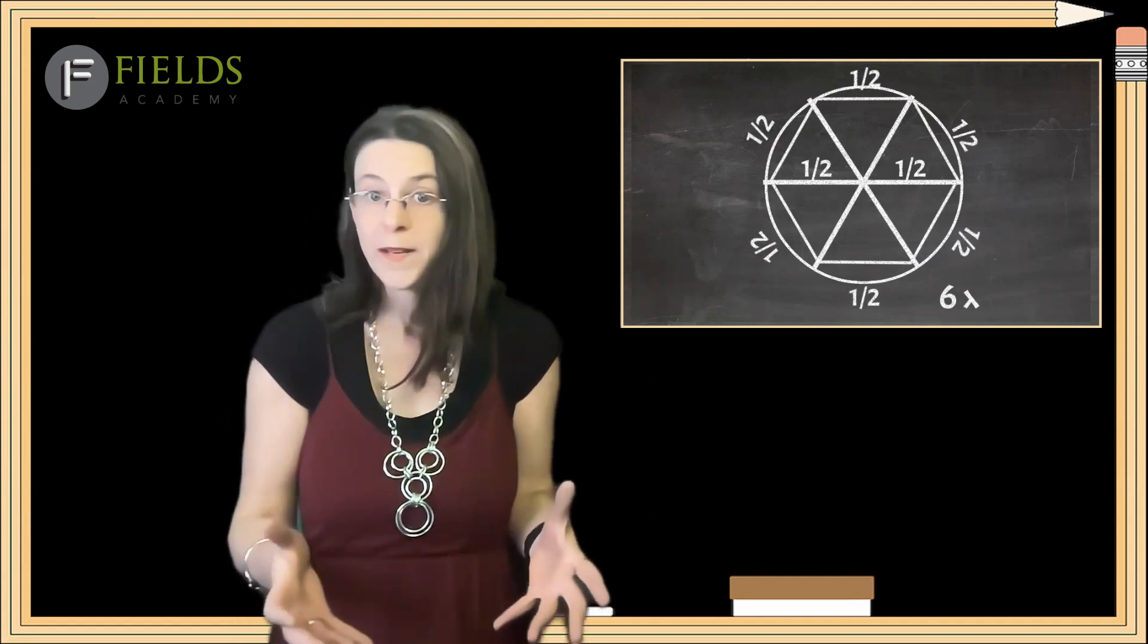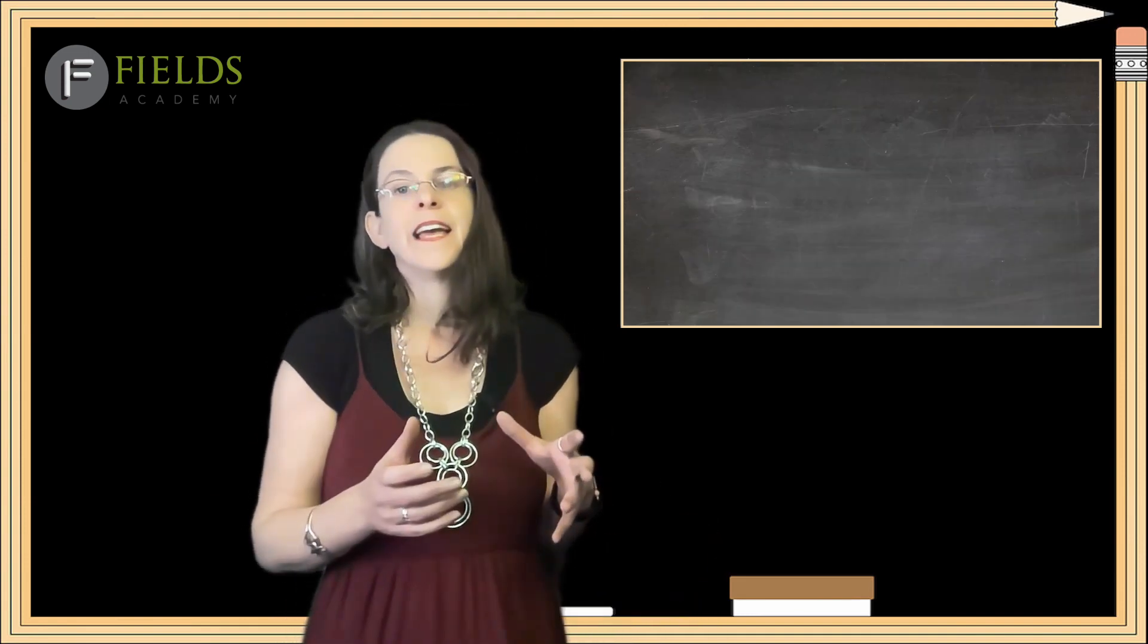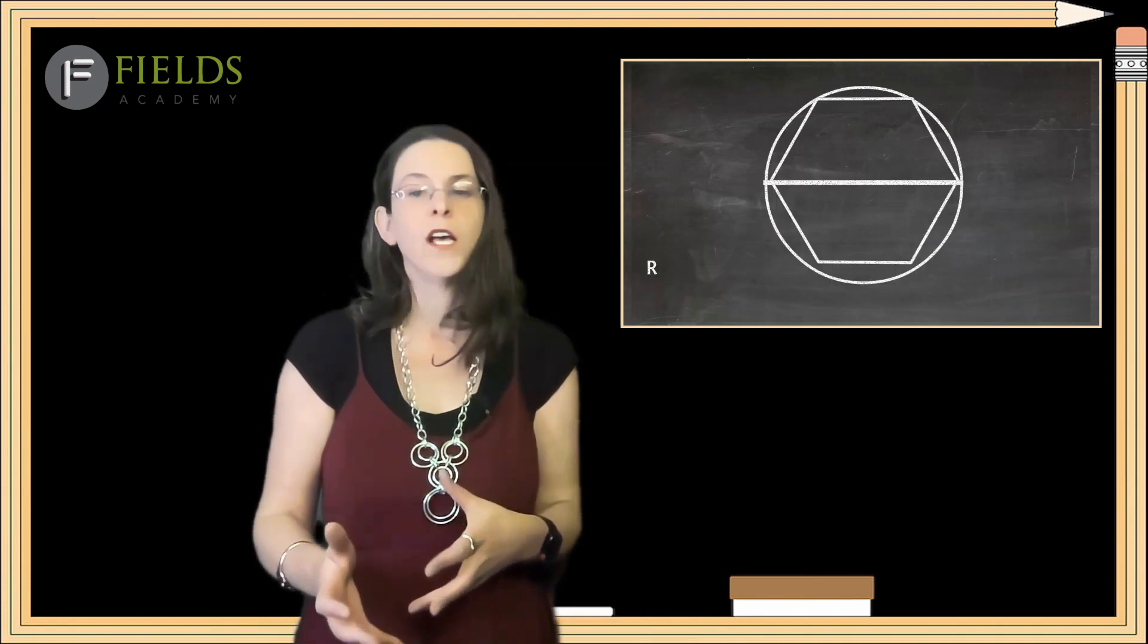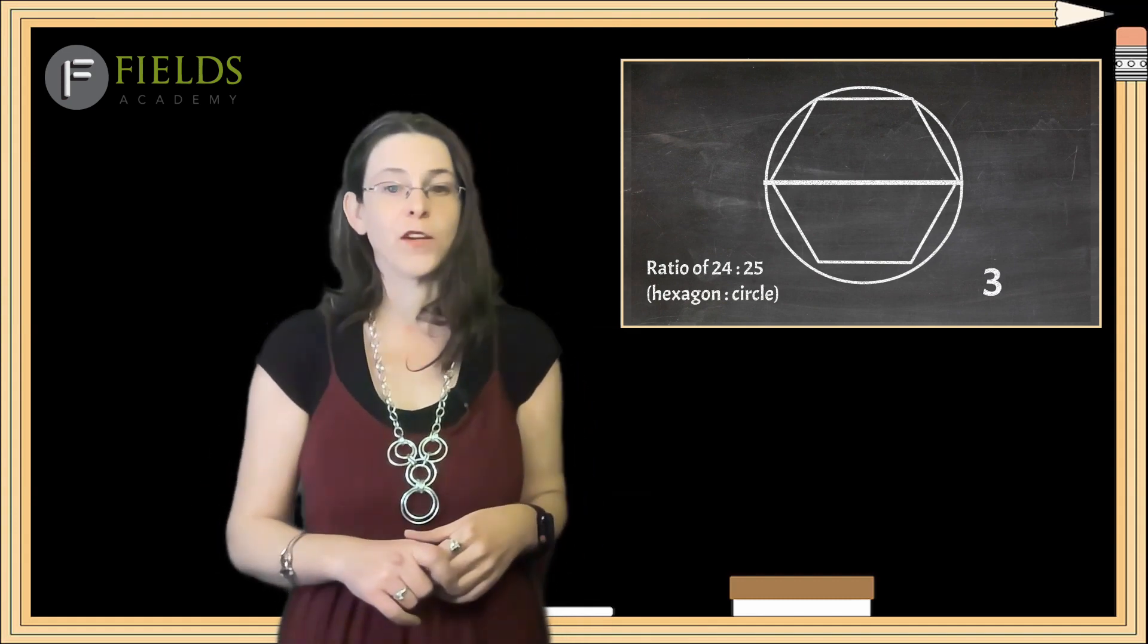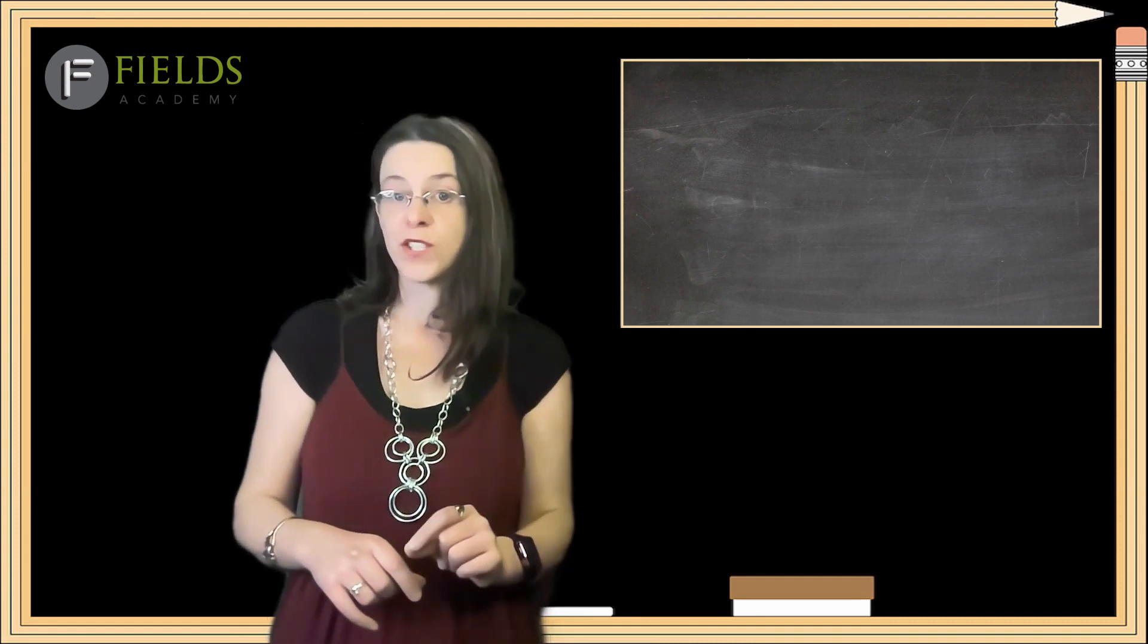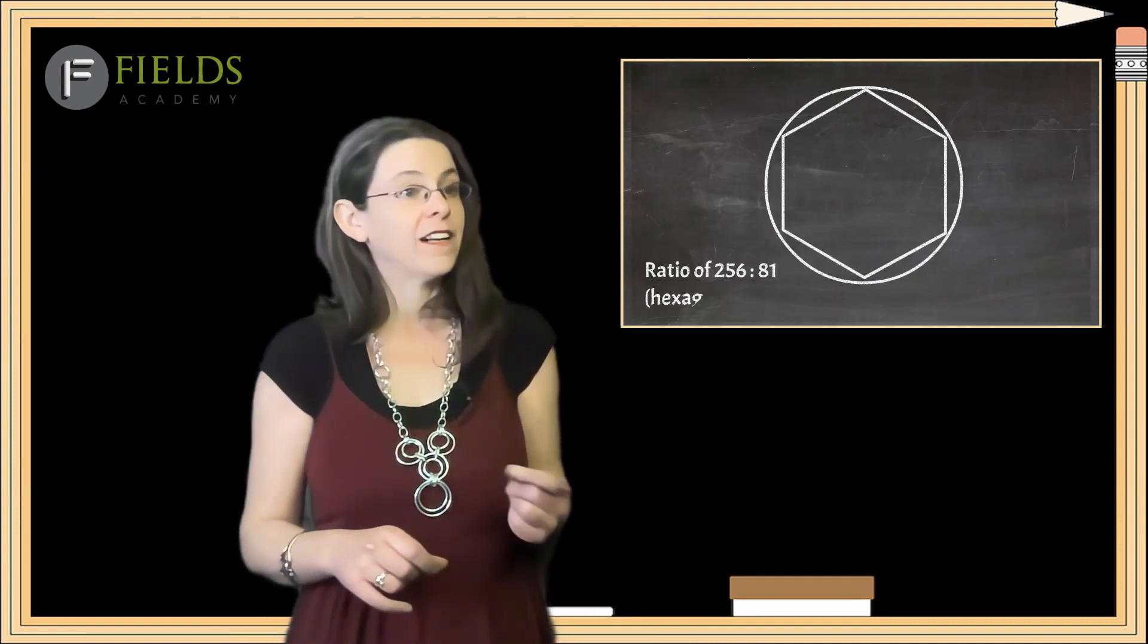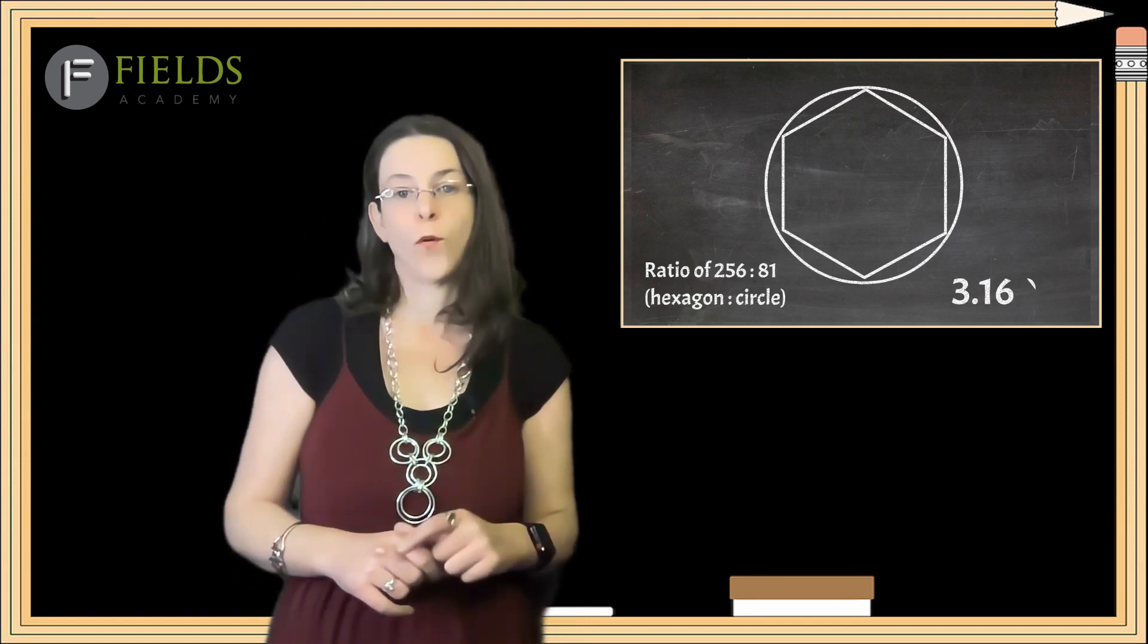Now, they actually used a ratio of hexagon to circle of 24 over 25, and they got a slightly more accurate value of 3.125. The ancient Egyptians used a ratio of 256 to 81, and got even closer, 3.16045.